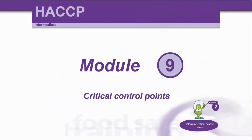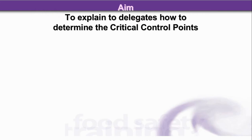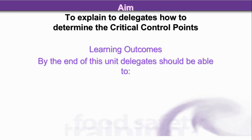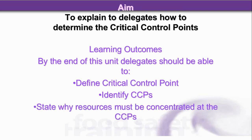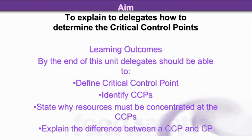We're going to look at Module 9 of the HACCP Intermediate Course, and this is Critical Control Points. The aim of this lesson is to explain to delegates how to determine the critical control points. By the end of this unit, delegates will be able to define critical control point, identify CCPs, state why resources must be concentrated at the CCPs, and explain the difference between a critical control point and a control point.